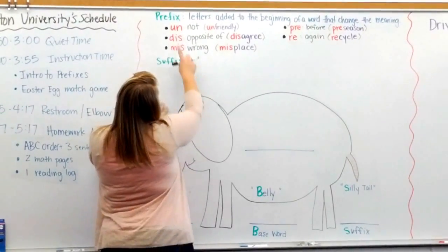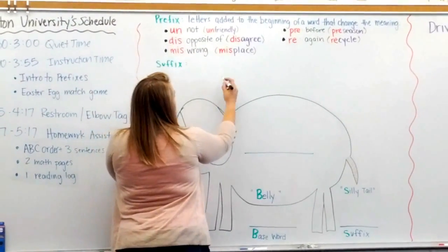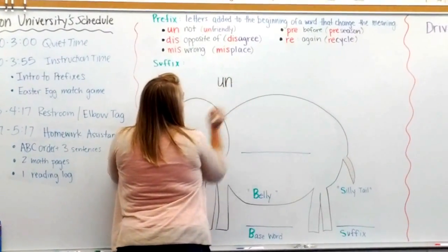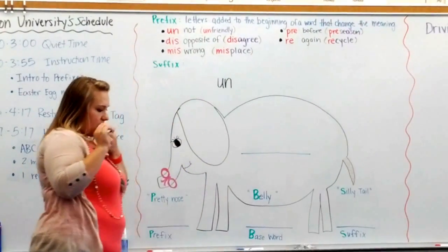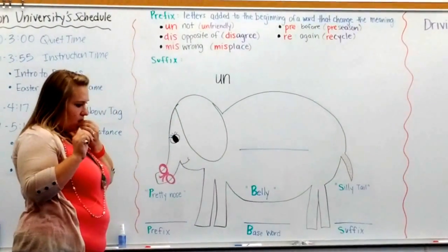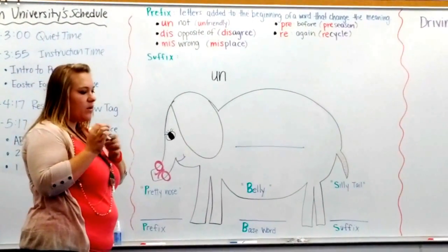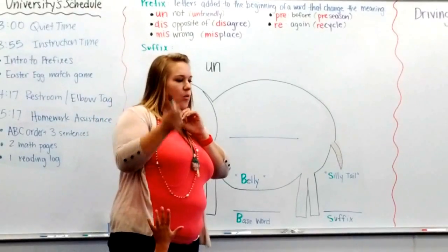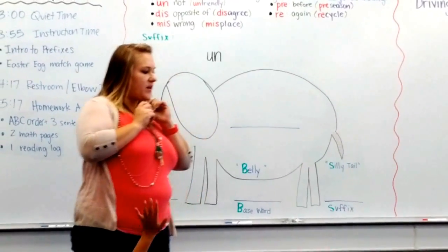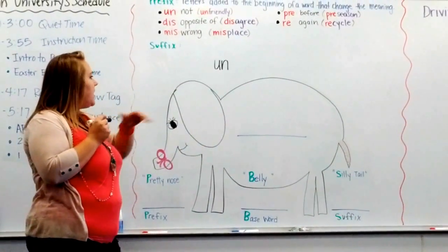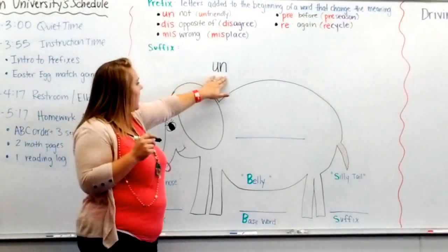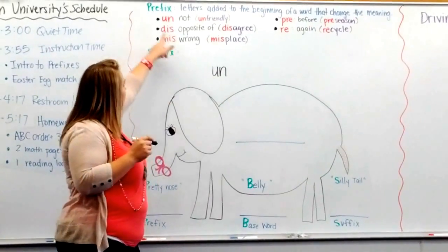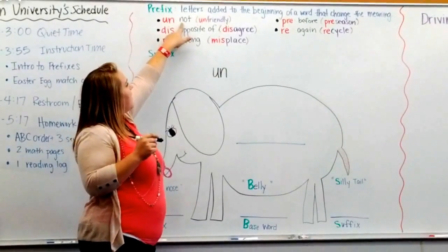So the first prefix we're going to learn are these two letters. Tell somebody next to you what those two letters say. These two letters say "un." When we put them in front of a word, it means "not."